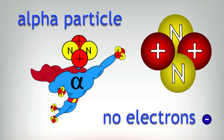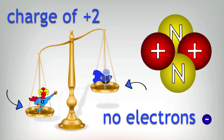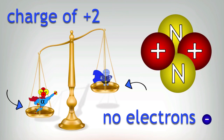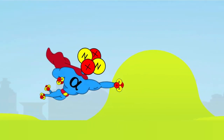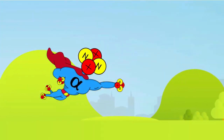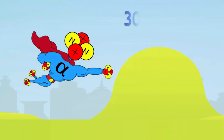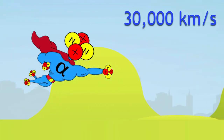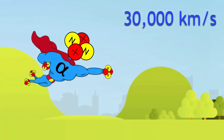It's the heaviest type of radiation, and the two protons give it a charge of plus two. Also, because it's very heavy, it travels slower than other particles — well, in particle terms anyway. They come out of the nucleus at 30,000 kilometers per second. You might find that a bit fast, but wait till you see the other particles.